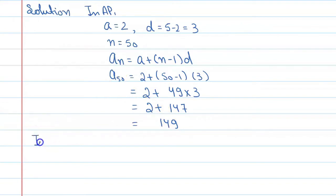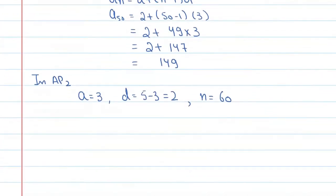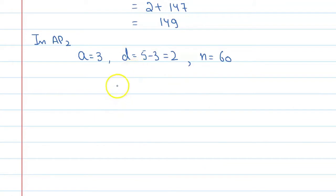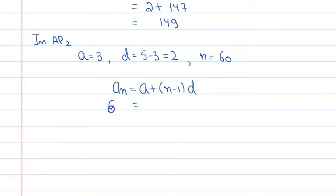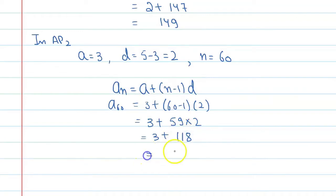Now for AP2: the first term is 3, and the common difference is 5 minus 3, which is 2. The number of terms n is 60. Using the general term formula: a₆₀ = a + (n−1)d = 3 + (60−1)×2 = 3 + 59×2 = 3 + 118 = 121. So the last term of AP2 is 121.